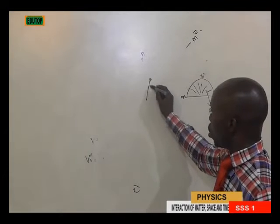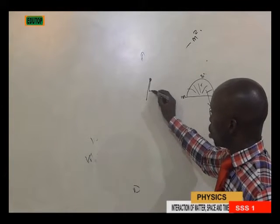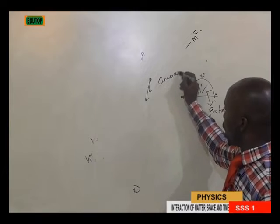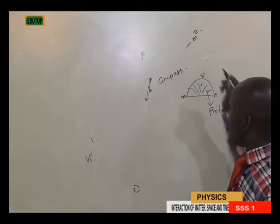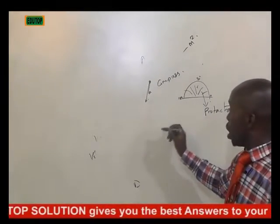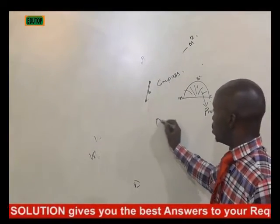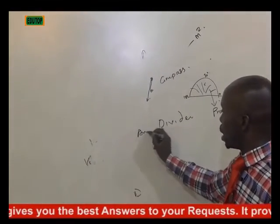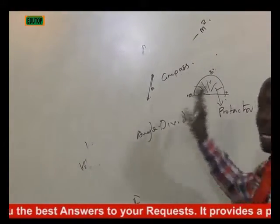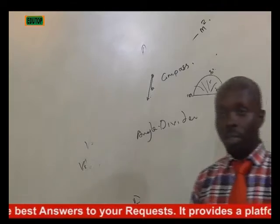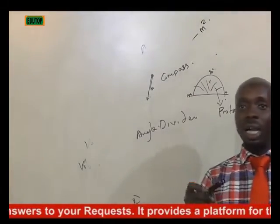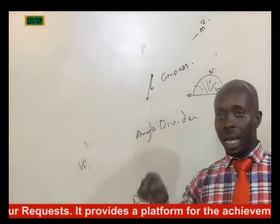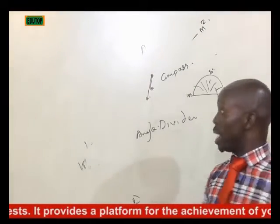We also have the compass, the protractor, and the dividers — we call it the angle divider. All these particular devices found in your mathematical set are actually used to measure distances, either radially or linearly.